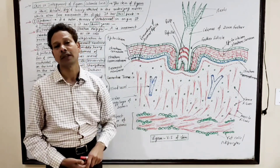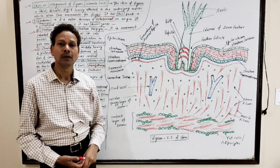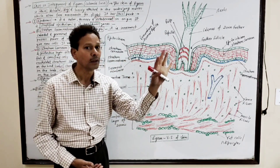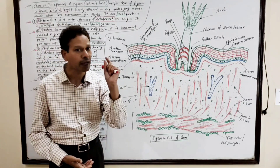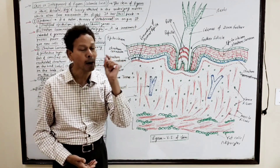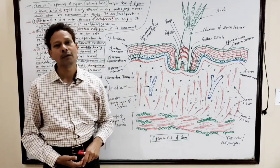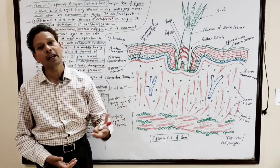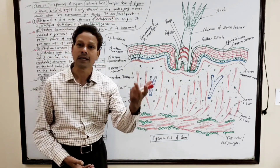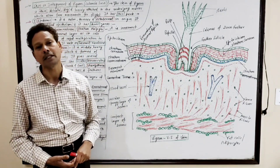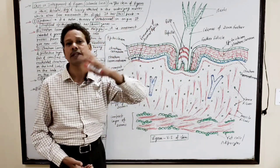In the case of pigeon, the skin is without any glands except on the tail region, the uropygium. The only gland present is the preen gland, also called the uropygial gland or coccygeal gland.